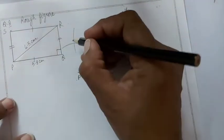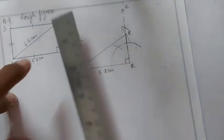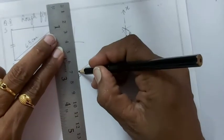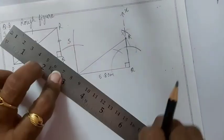That will be the point S, and then join PS and RS.